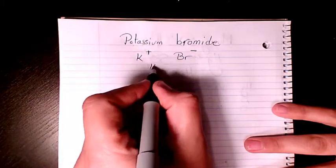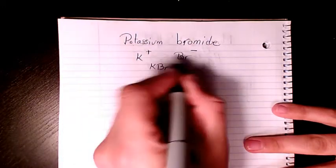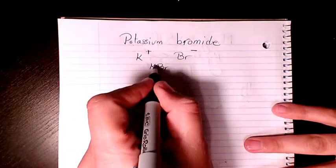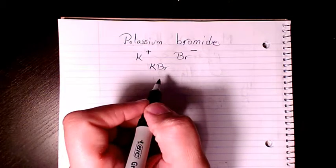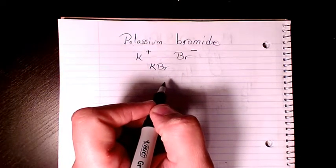So the compound is going to be KBr. Since both of them are one, none of them get a subscript here, so it's going to be just KBr. Now if I want to show you how to calculate their